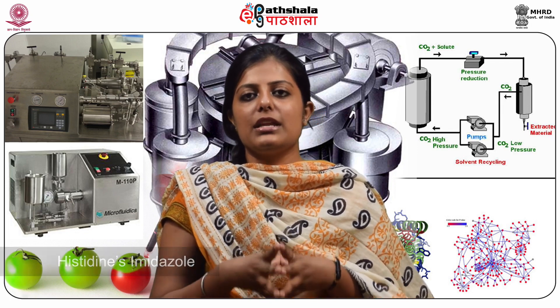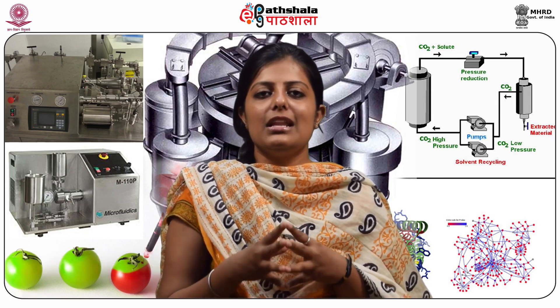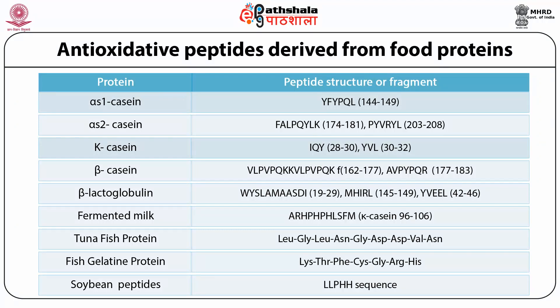Histidine, with its imidazole-containing side chain, is also oxidatively labile. Antioxidant activity of bioactive peptides can be attributed to their radical scavenging, inhibition of lipid peroxidation and metal ion chelation properties. Several peptides derived from hydrolyzed food proteins — such as casein, whey protein, soybean, rice bran, chia seed proteins, buckwheat proteins, egg yolk proteins, porcine myofibrillar proteins, bovine myofibrillar proteins and aquatic bioproduct proteins — possess antioxidant activity.